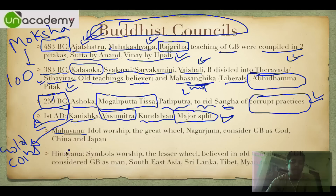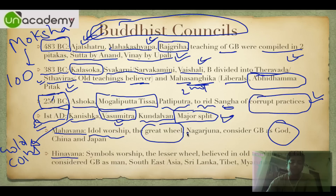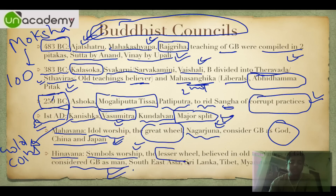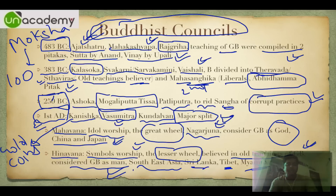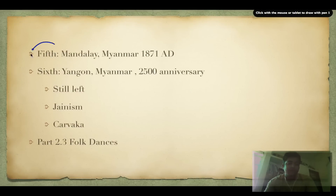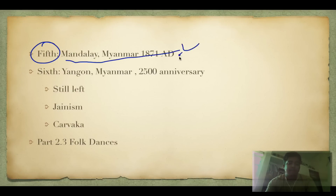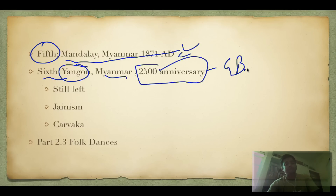At the fourth council there was a major split in Buddhism. Mahayana — the Great Wheel — believed in idol or god worshipping, was founded by Nagarjuna, and is most prevalent today in China and Japan. Hinayana — the Lesser Wheel — treated Gautam Buddha as a man, were symbol worshippers, believed in his old teachings, and are prevalent in Southeast Asia, Sri Lanka, Tibet, and Myanmar. A fifth council happened in Mandalay, Myanmar, and a sixth in Yangon, Myanmar, for the 2,500th anniversary of Gautam Buddha.